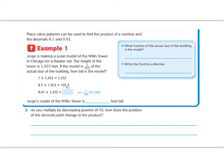Let's read the blue box and help answer some questions first. What fraction of the actual size of the building is the model? So it says the model is going to be one one hundredth of the actual size. So one over one hundred. And the next one says, write the fraction as a decimal. So if that is one one hundredth, then that would be a one in the hundredths place. So that would be zero point zero one, because it's a one in the hundredths place.